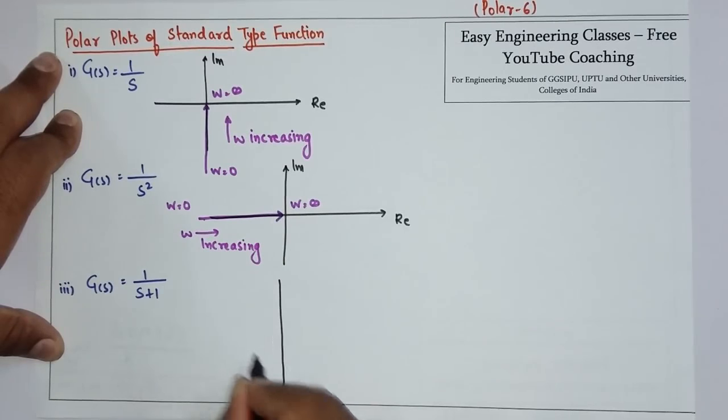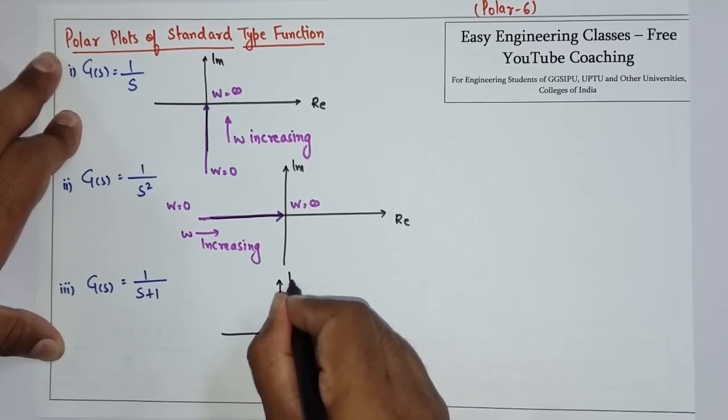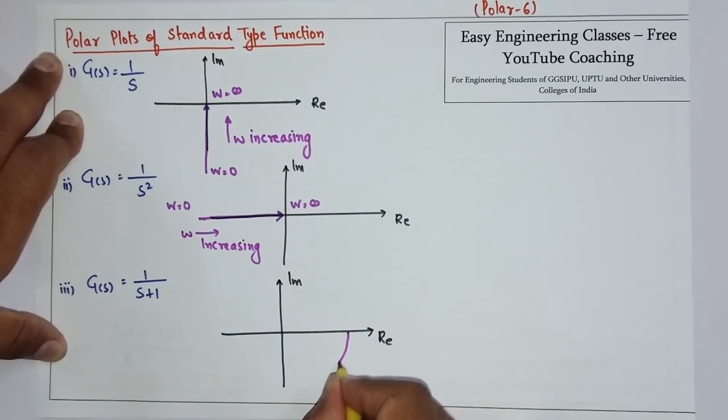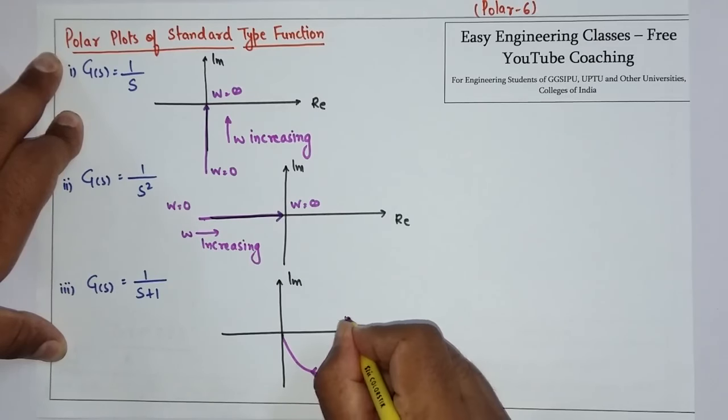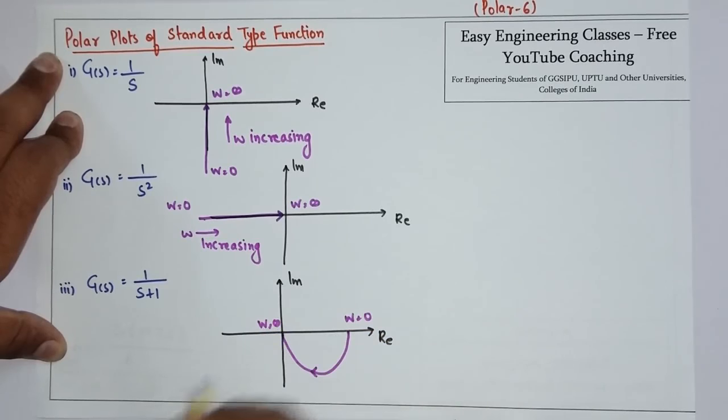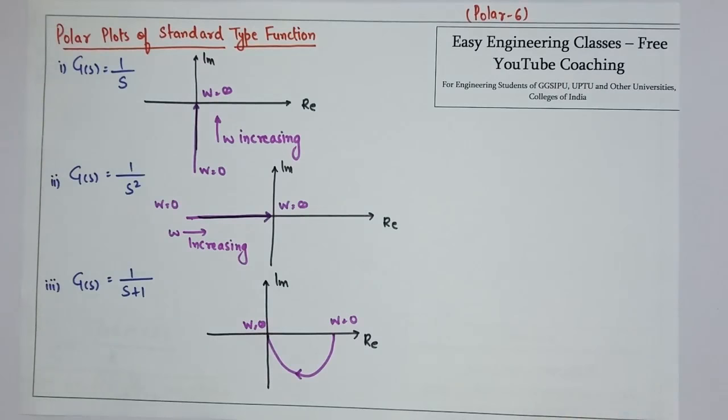And third is G of s equals 1 over s plus 1. This is real, this is imaginary. This polar plot starts here and comes to this point. This is your omega 0 and this is your omega infinity.